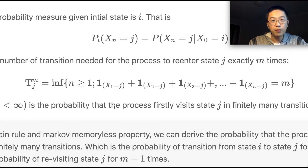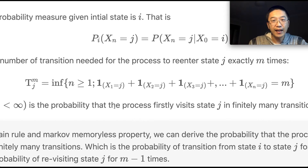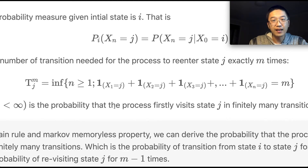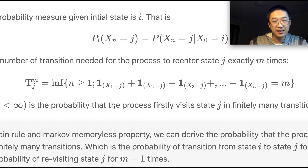Define T_j^m as the number of transitions needed for the process to re-enter state j exactly m times. The value of T_j^m is the step n of the Markov process when it first revisits state j exactly m times. For example, if the process revisits state j at step 10 (i.e., X_10 = j), then T_j^m = 10. We take the infimum of possible outcomes satisfying the condition.